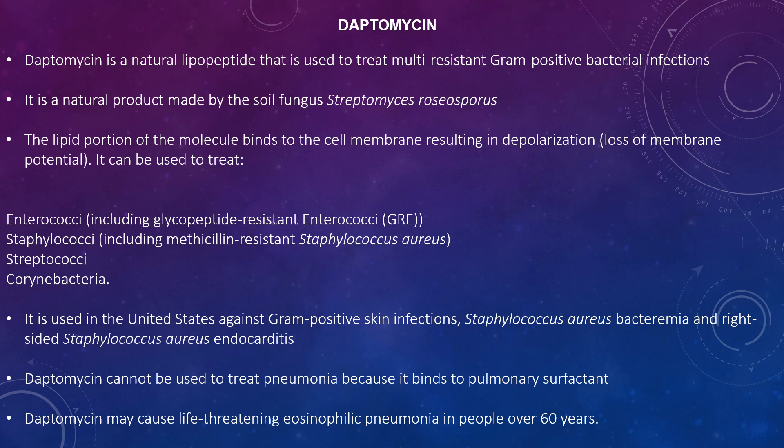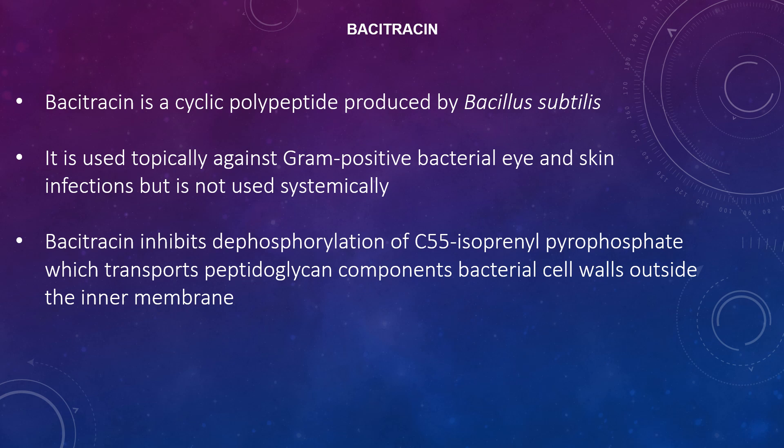Daptomycin cannot be used to treat pneumonia because it binds to pulmonary surfactant. It can also cause life-threatening eosinophilic pneumonia in people over 60 years old. The final antibiotic is bacitracin, a cyclic polypeptide produced by Bacillus subtilis. It is used topically against gram-positive bacterial eye and skin infections but is not used systemically. Bacitracin inhibits dephosphorylation of C55 isoprenyl pyrophosphate, which transports peptidoglycan components out of the inner membrane.